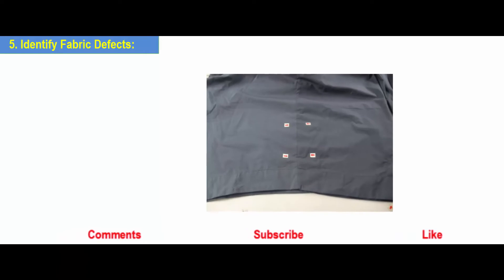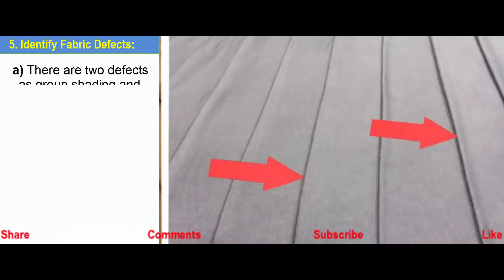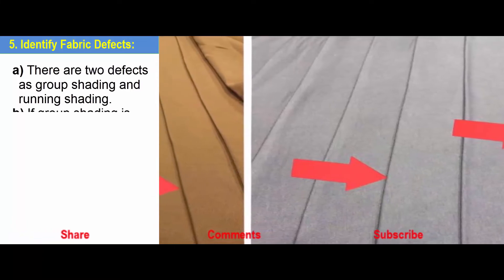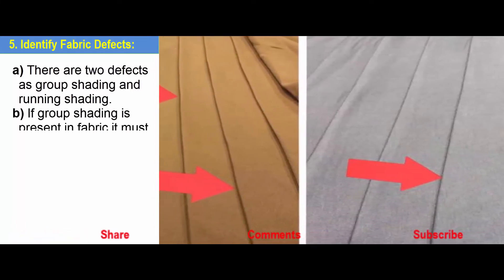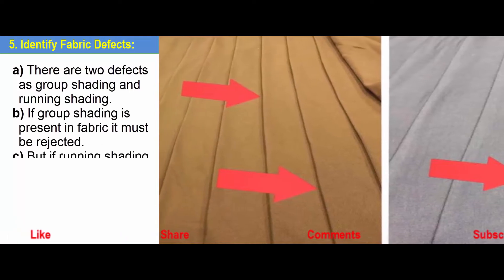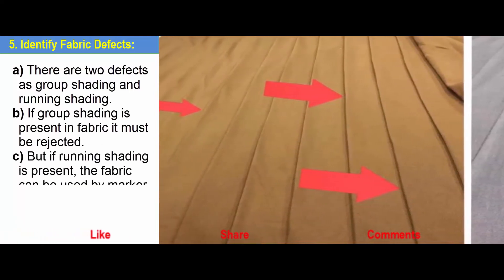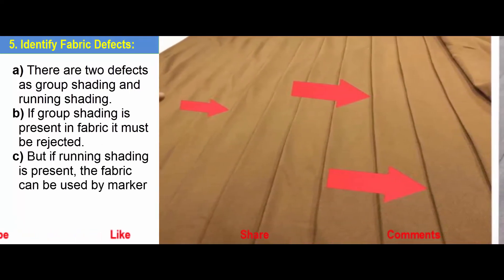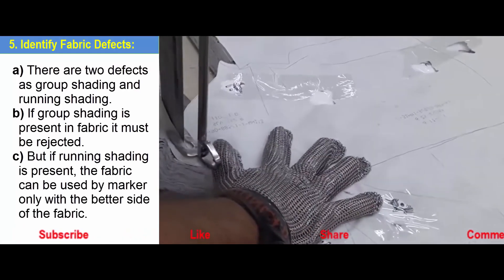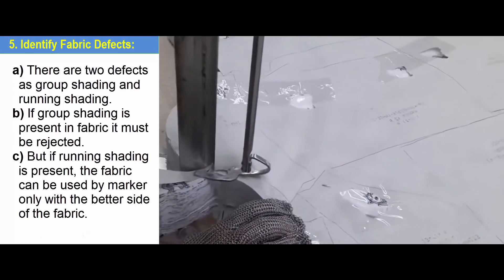Step 5: Identify Fabric Defects. There are 2 defects known as group shading and running shading. If group shading is present in the fabric, it must be rejected. But if running shading is present, the fabric can be used by marking only the better side of the fabric.